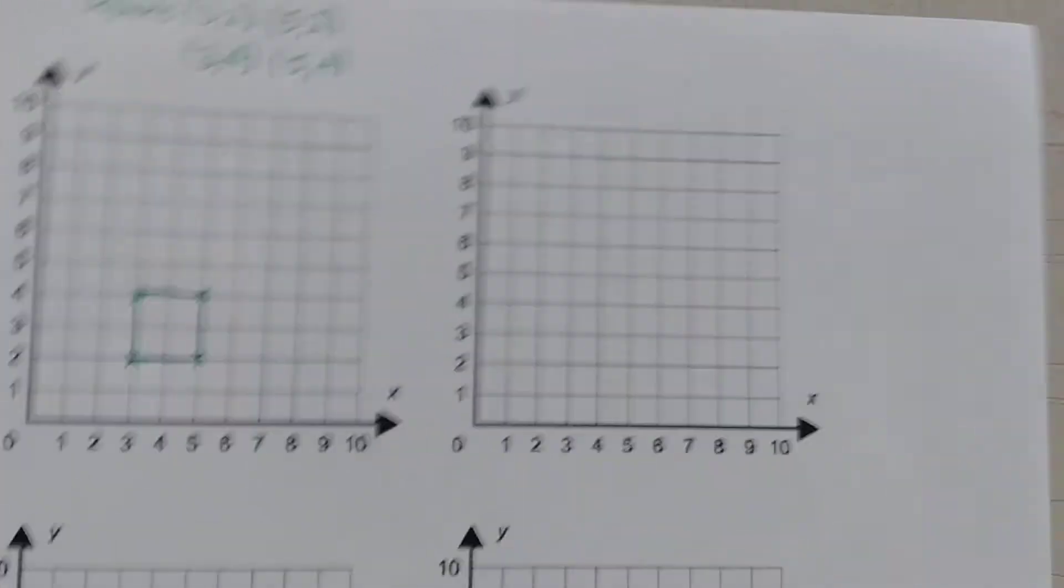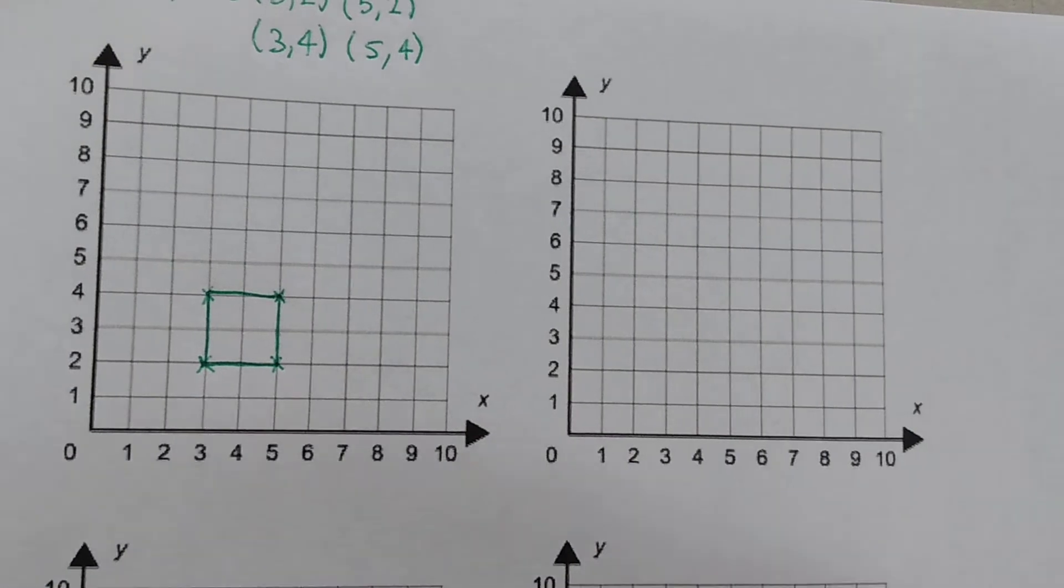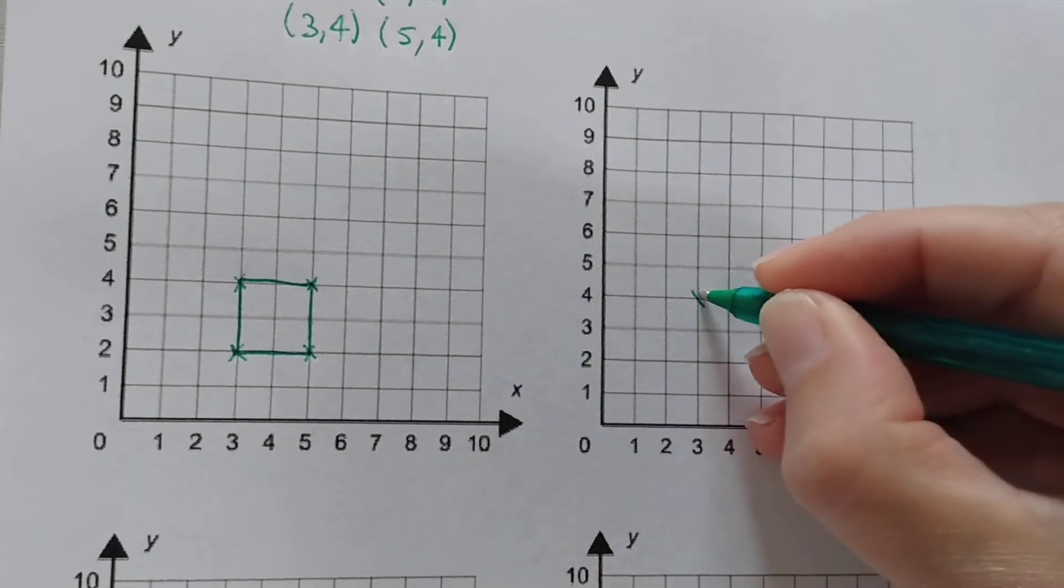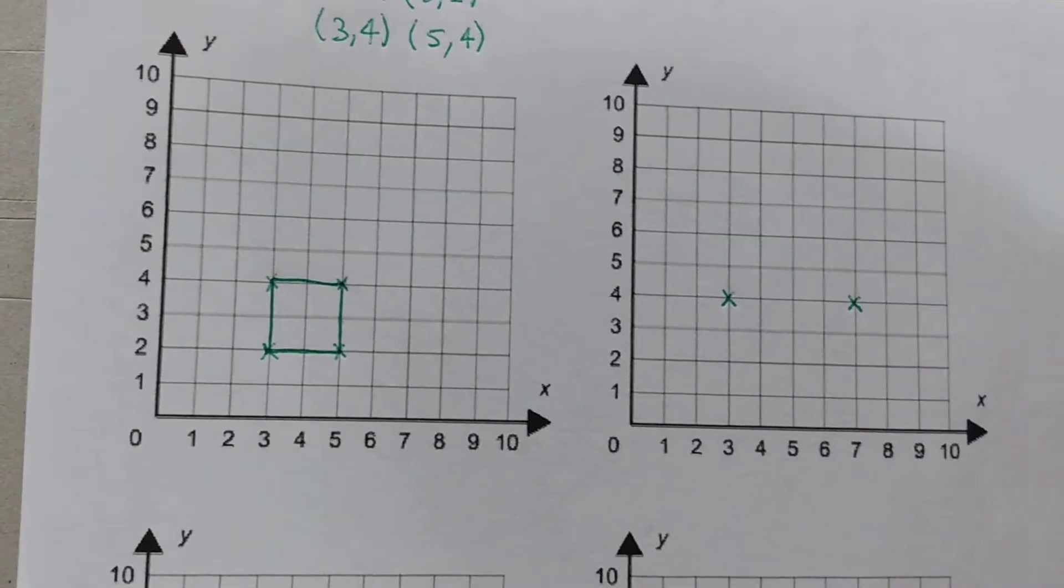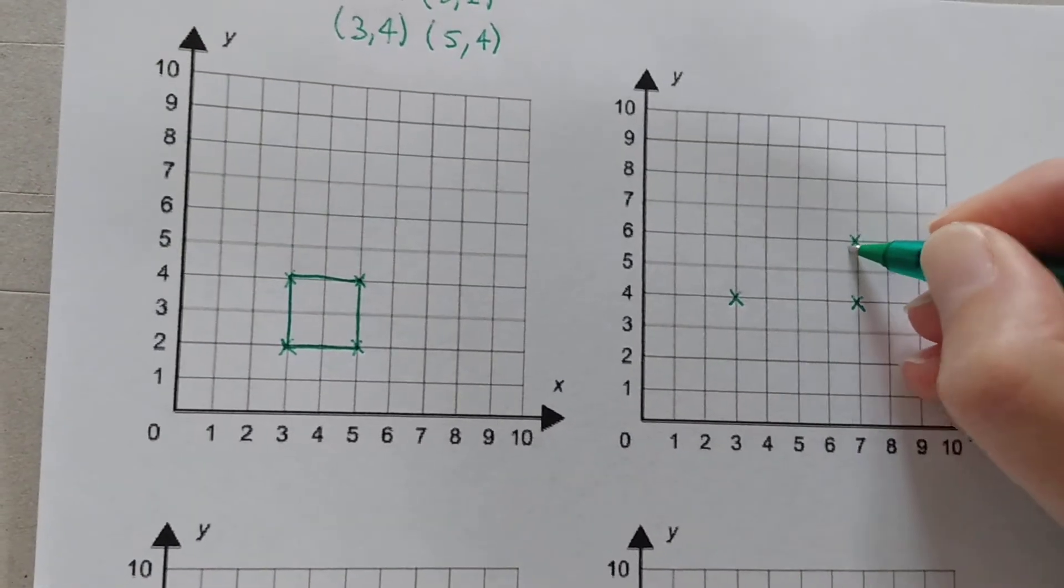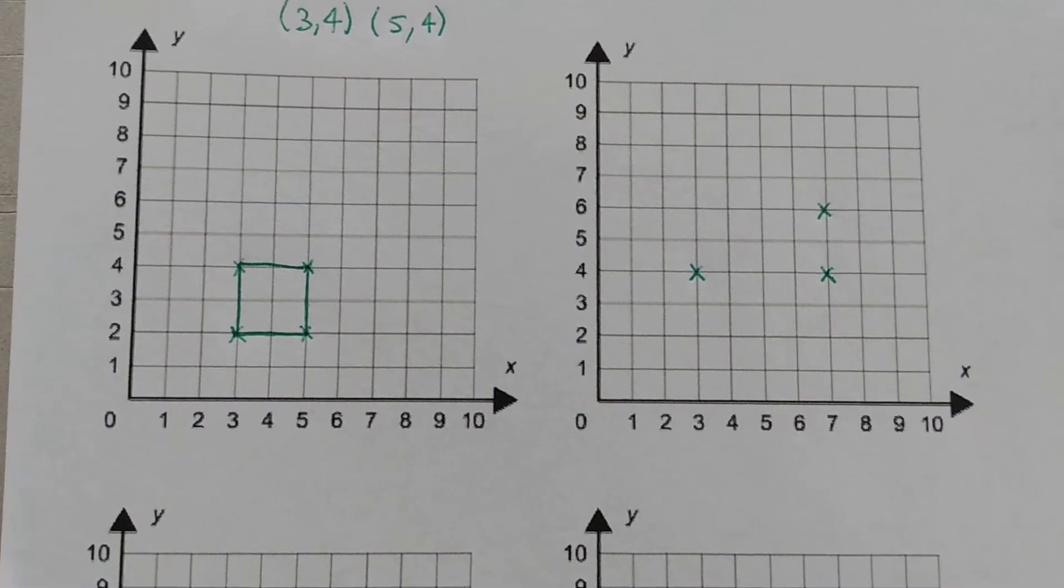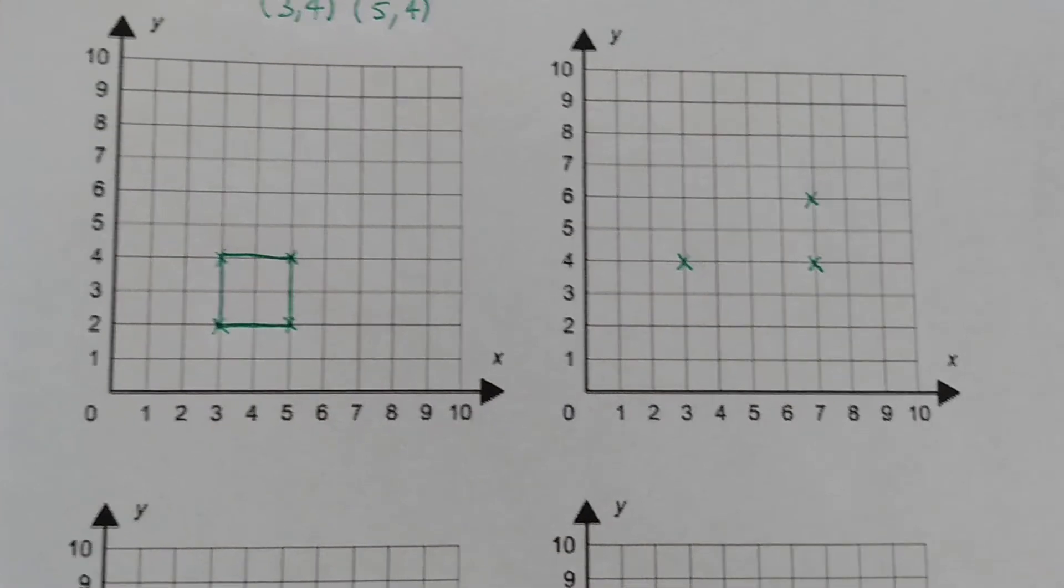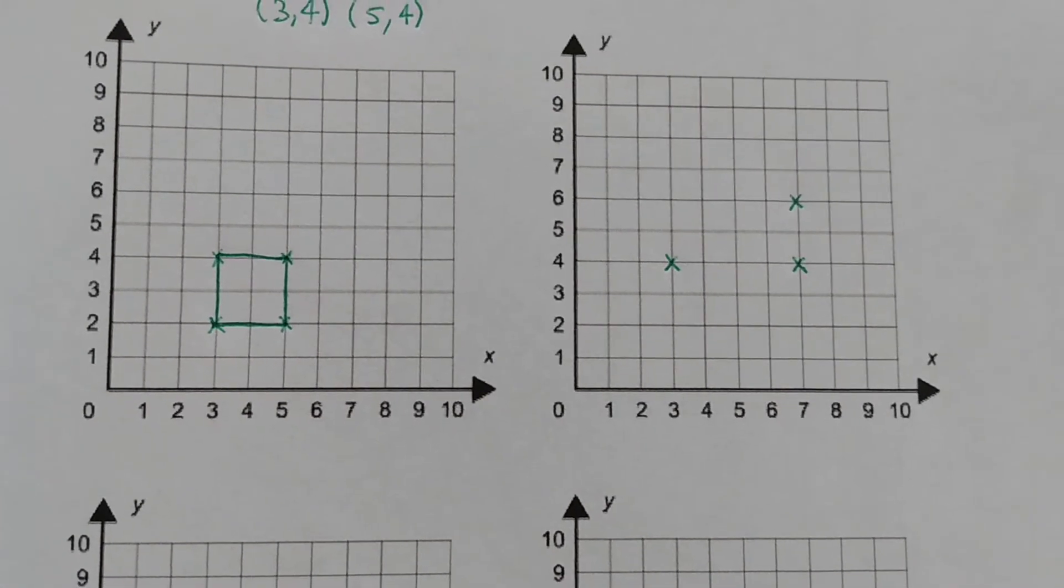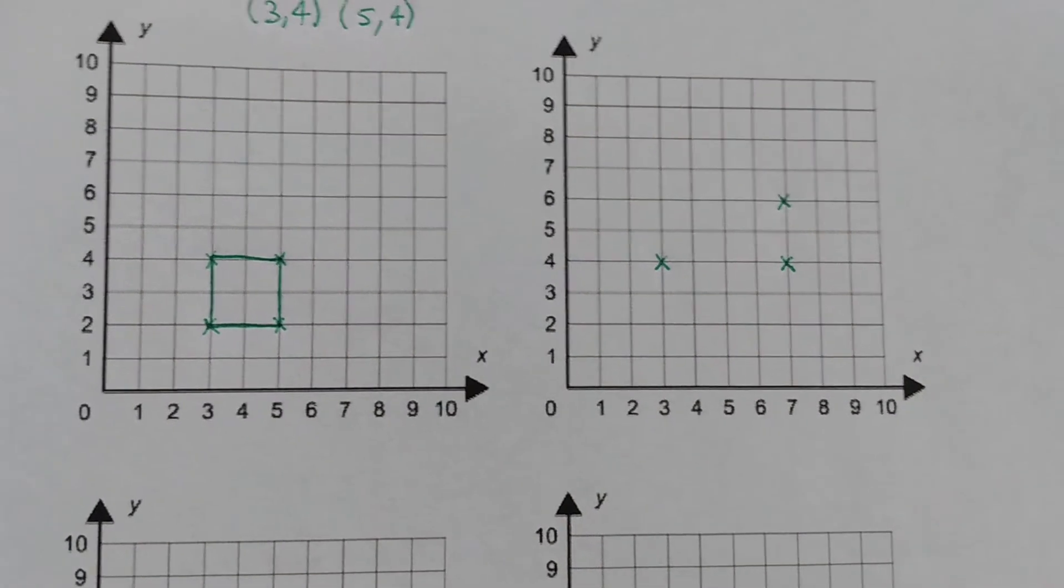So what about if we looked at a different shape? This time I would like us to look at a rectangle. So I'm going to give you three sides of a rectangle. I want you to join the lines that we've got between the marks. Decide where the last coordinate needs to be.